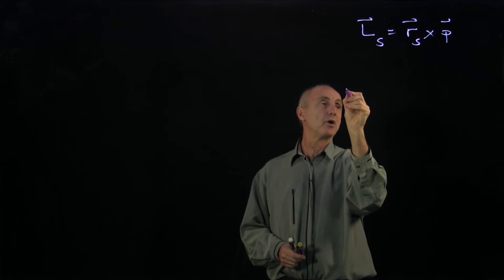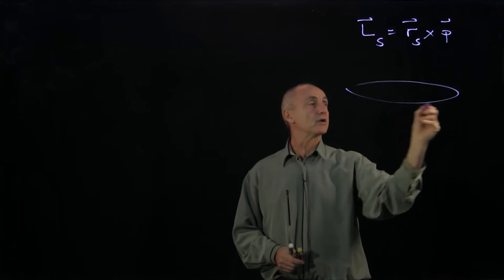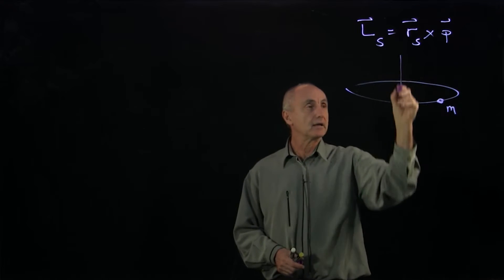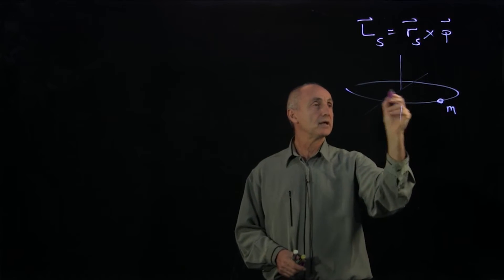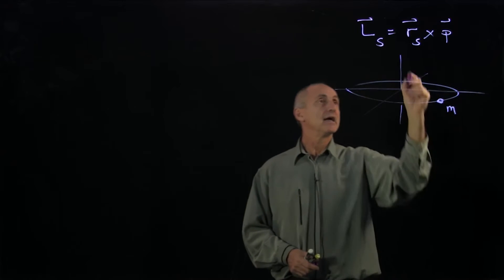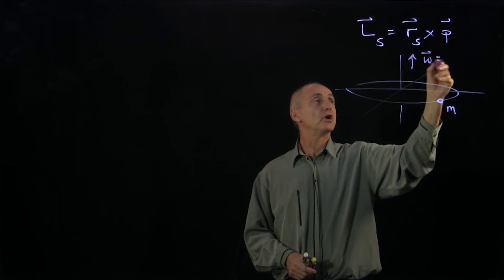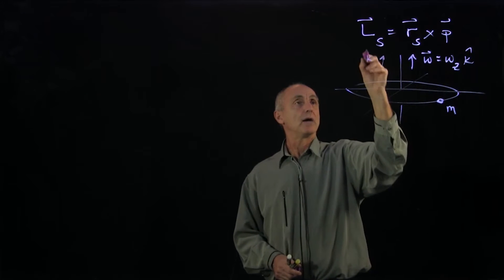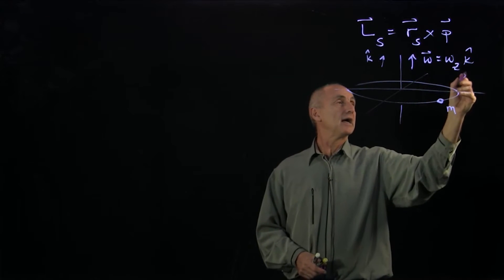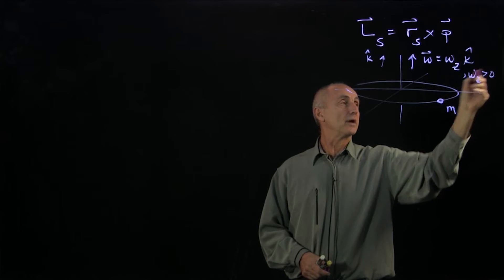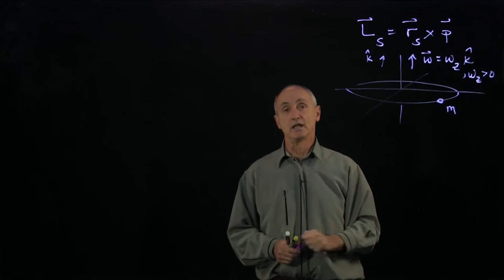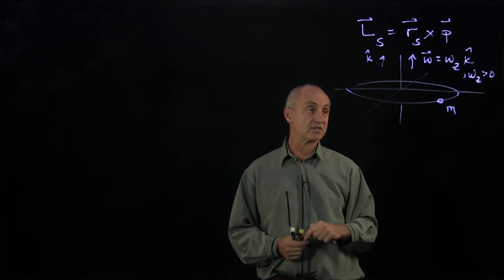Suppose we have a particle that's undergoing circular motion, mass m. Let's choose some axes. Our particle is rotating about the vertical axis. I'm going to call that axis k-hat, and I'll make omega z positive. So it's rotating about the k-axis, the z-axis.